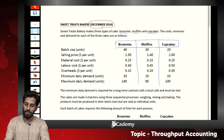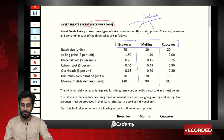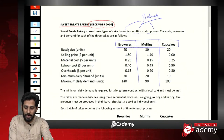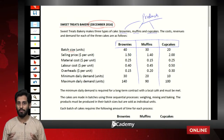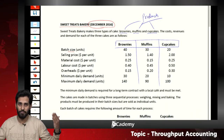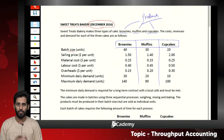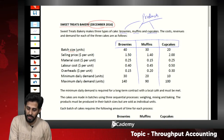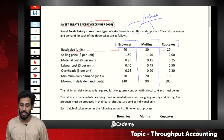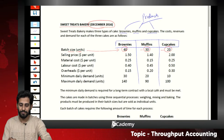Sweet Treat Bakery makes three types of cakes: brownies, muffins, and cupcakes. One thing to notice is that production is given in batch sizes. A batch is a collection of identical units. The batch sizes in units are 40, 30, and 20 respectively — meaning one batch of brownies contains 40 units, muffins 30 units, and cupcakes 20 units.